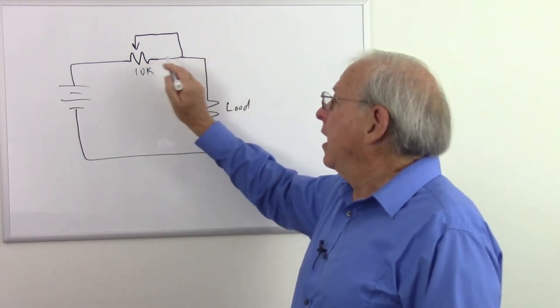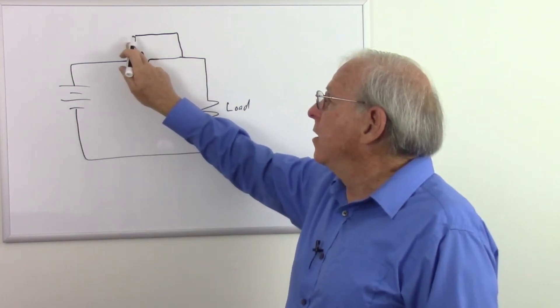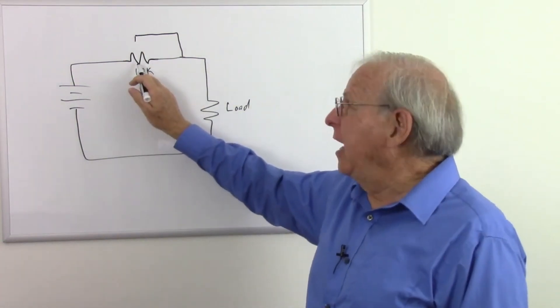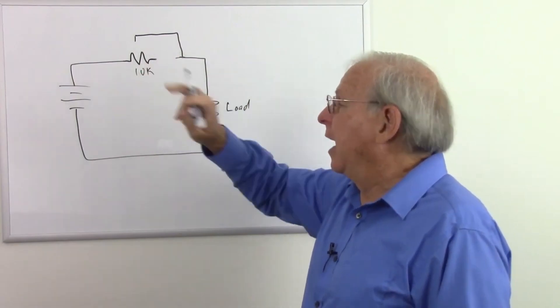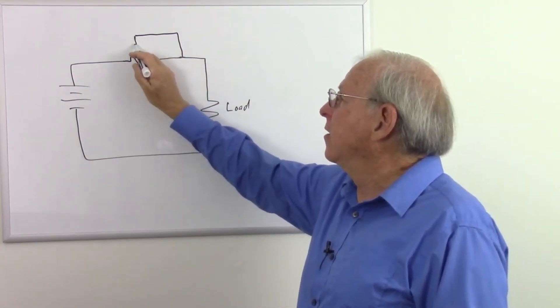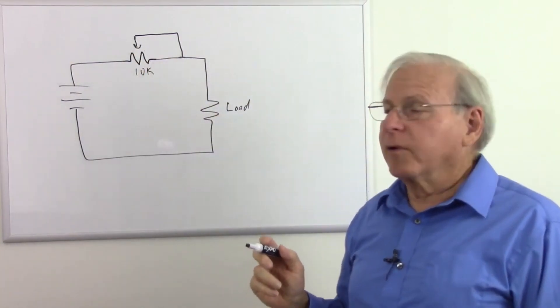So in this case, if somehow this doesn't make contact, we still have 10k of resistance, not an open circuit. So your potentiometer is put in like this to make a variable resistor.